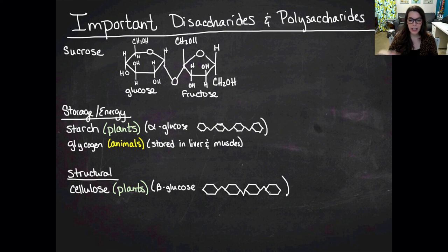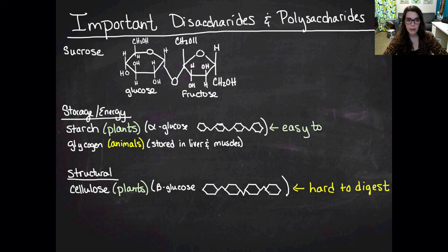Any breaking down of cellulose that your body does, it does through the use of mutualistic bacteria that live in your intestines. When they talk about your gut biome or your microbiome, that's what they're talking about - the bacteria that live in your intestines and help you break down things like cellulose. Cellulose is hard to digest, but starch is easy to digest.